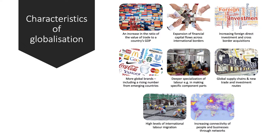Globalisation is associated with the creation of much deeper specialisation of labour — making specific component parts for a product that gets embedded into global supply chains. For example, Apple's iPhone is sourced from nearly 50 different countries across six continents. We're also seeing the emergence of new trade and investment routes, including the one that China is trying to build at the moment.